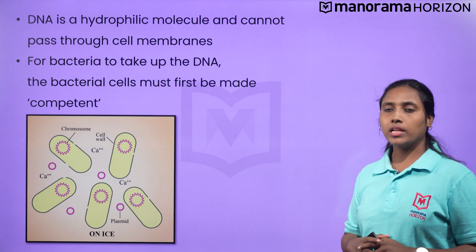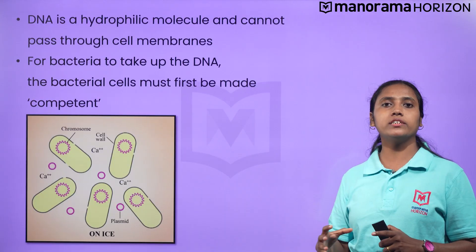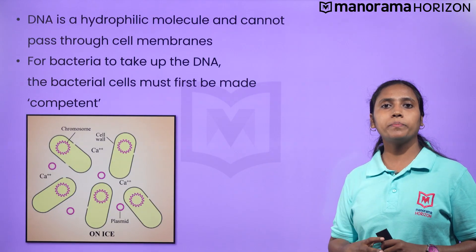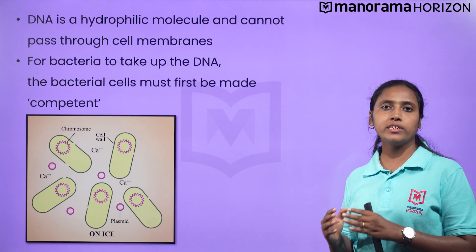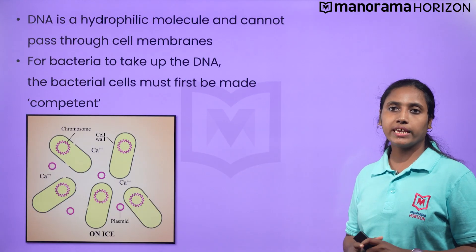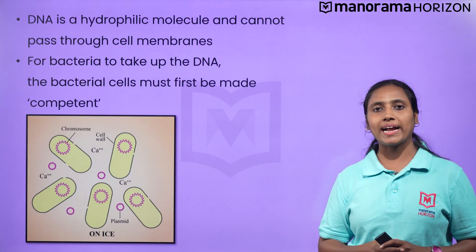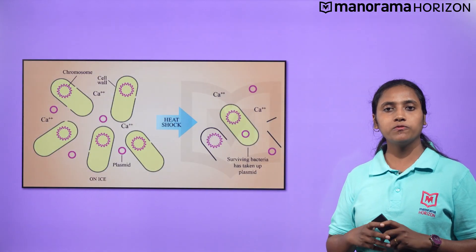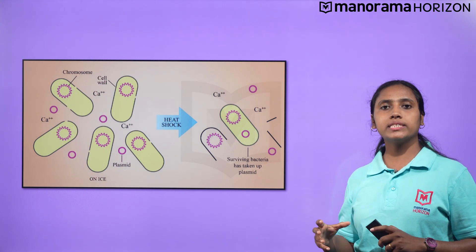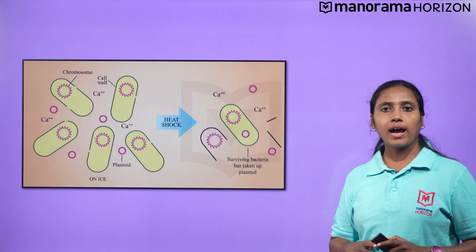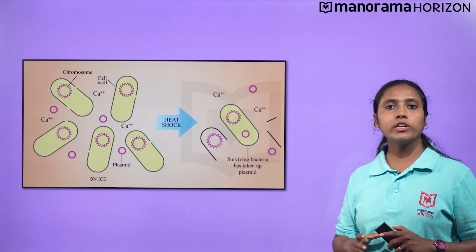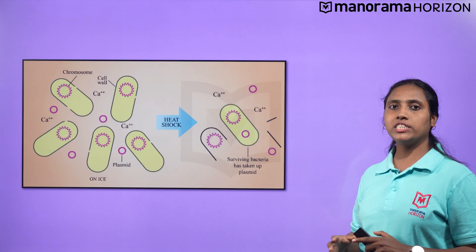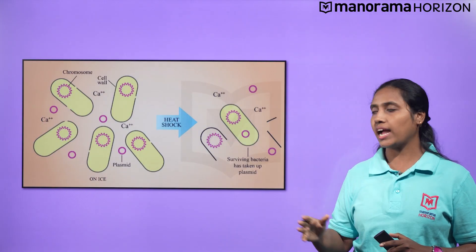The bacterial cells are made competent by treating them with a specific concentration of a divalent cation such as calcium. This increases the efficiency with which DNA enters the bacterium through pores in its cell wall. The recombinant DNA is then forced into such cells by incubating the cells with recombinant DNA on ice, followed by heat shock at 42 degrees Celsius, and then putting them back on ice. This enables the bacterium to take up the recombinant DNA.